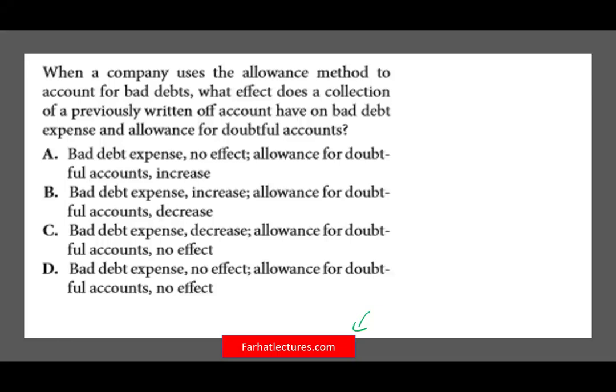Let's look at this question: when a company uses the allowance method to account for bad debt, what effect does a collection of a previously written-off account have on bad debt expense and allowance for doubtful accounts? This question is loaded. To answer it, you need a solid understanding of how the allowance method works. Let me walk you through a complete allowance example.